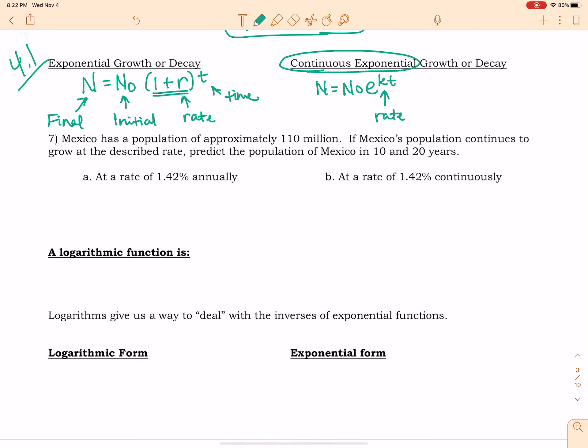Okay, this positive right here means growth. If it's decay, it will be Y minus R. And then for the continuous exponential, this is growth here. So if it's decay, it will be negative KT. Just so you know.